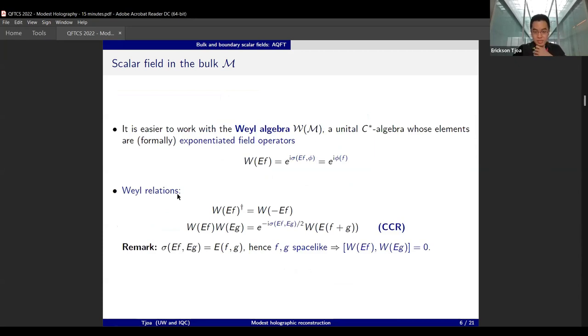At the same time, it is also easier to work with the Weyl algebra, the exponentiated version of the field operator, for technical reasons like boundedness. This is a unital C* algebra whose elements are formally the exponentiated field operators and they obey a slightly different version of a relationship called the Weyl relation, which reflects the BCH formula. Crucially, the properties of causal propagators and the symplectic two-form actually conspire to reflect the canonical commutation relations.